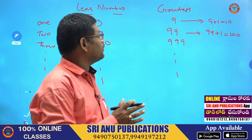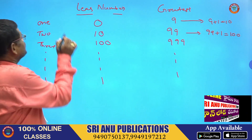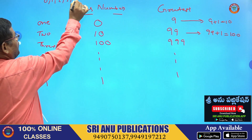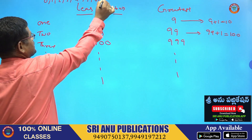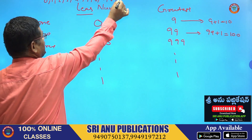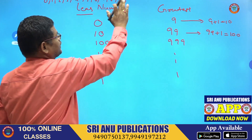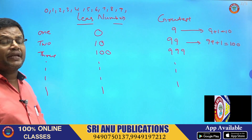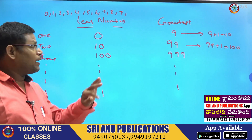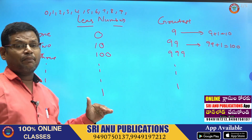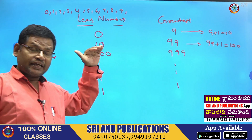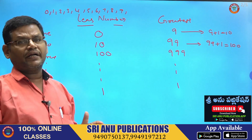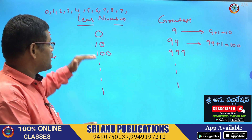What are the digits? We are taking 0, 1, 2, 3, 4, 5, 6, 7, 8, 9 — that's it. By using these, we can form any number. That number may be a single digit number — it may be the least number or it may be the greatest number.